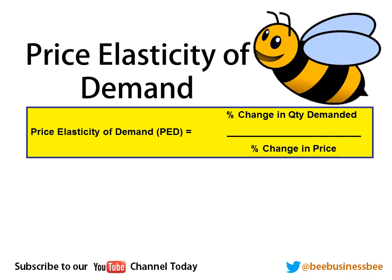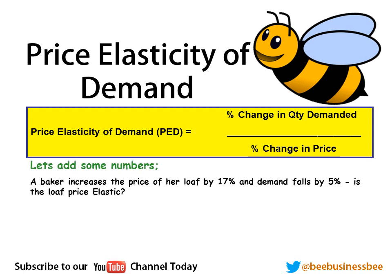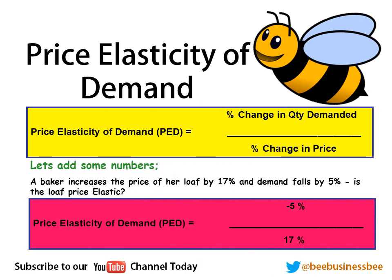You will need to learn the price elasticity of demand formula: PED. Notice there are two steps. You first calculate the percentage change in quantity demanded and the percentage change in price, using the formula: change divided by original, times 100. Let's take a simple question. A baker increases the price of her loaf by 17% and demand falls by 5%. If we put these numbers into the formula — minus 5 divided by 17 — the answer is 0.2, or minus 0.2.